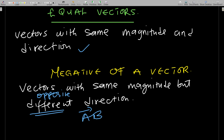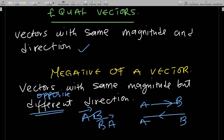For example, the negative of vector AB is vector BA. Vector AB moves from A to B, while BA moves from B to A. They have the same magnitude but opposite directions.